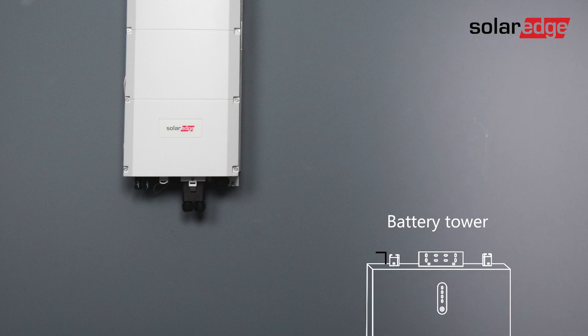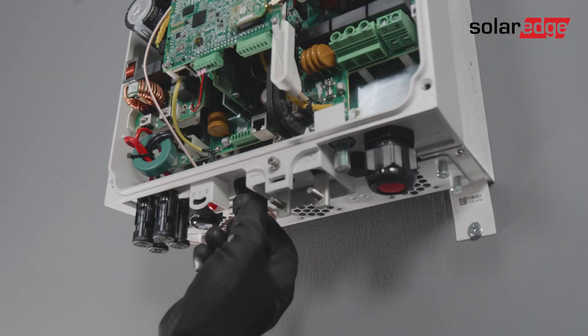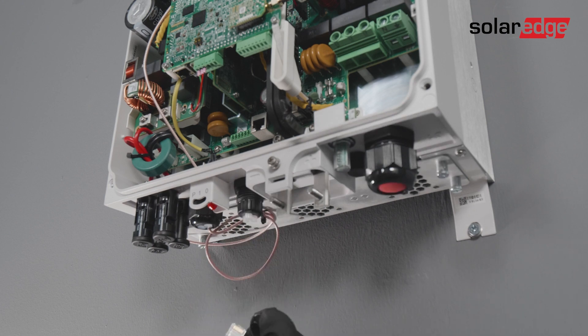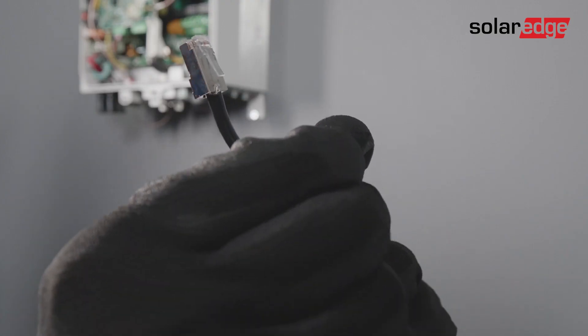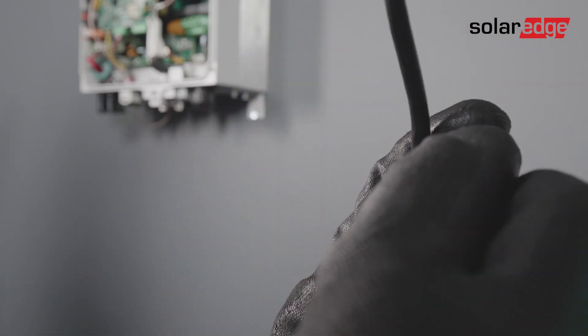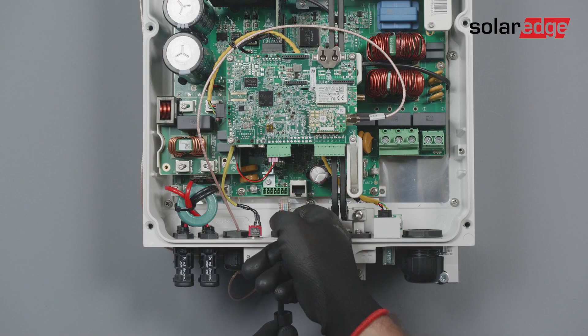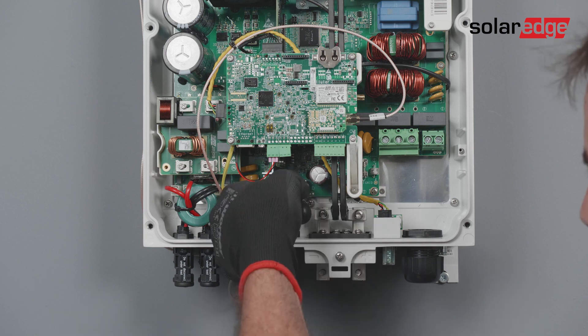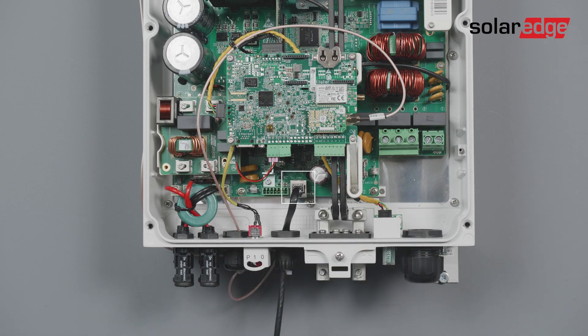First, let's connect the communication cable between the battery and the inverter. This is established using the CAN-BUS protocol. Open the communication gland 2 and pass the CAN-BUS connector and cable through the gland. Please note the cable size and the gland pass-through. Connect the cable to the CAN-BUS connector located close to the gland.